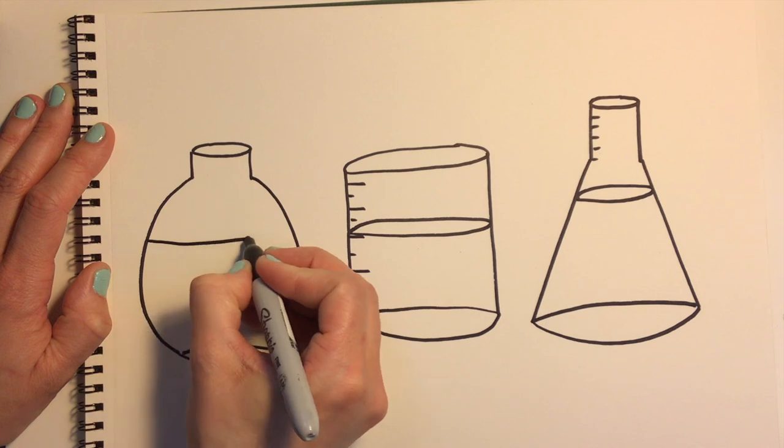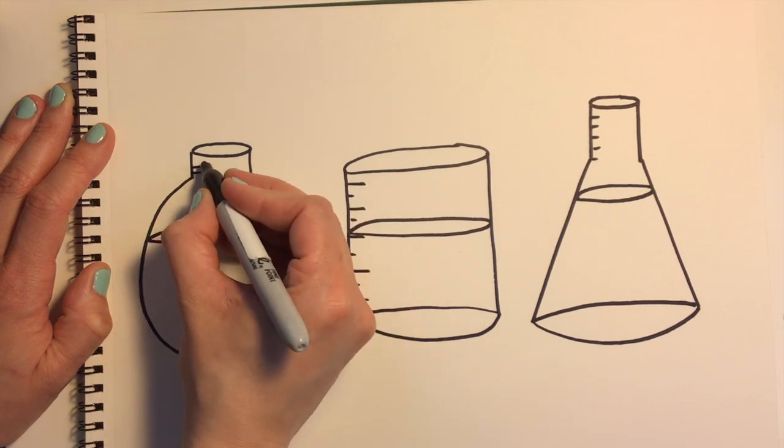Decide where you want your liquid. Flat oval again, one side to the other, and a few science lines.